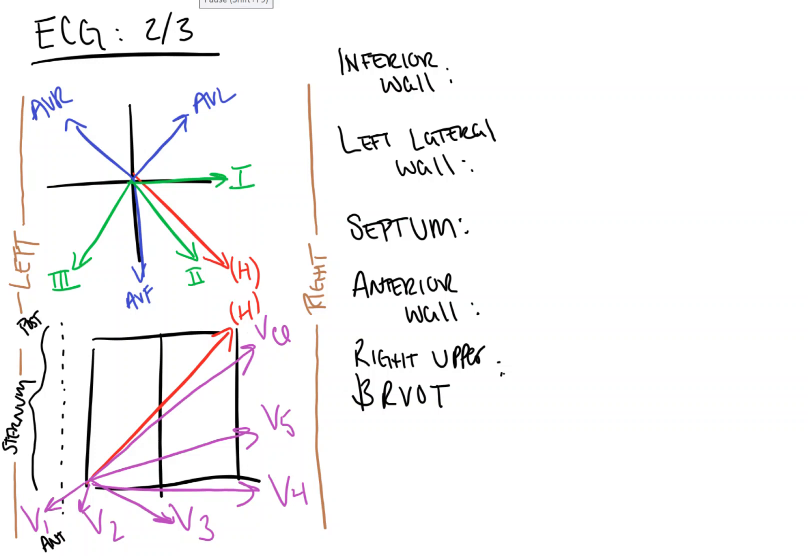Hi everyone! On this video from Count Backwards from 10, we're going to take a look at part 2 of our EKG lecture of 3 in order to briefly discuss the distribution of the EKG, meaning which leads correspond to which anatomical parts of the heart, as well as the blood supply to those parts of the heart.